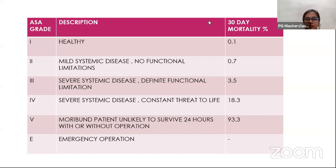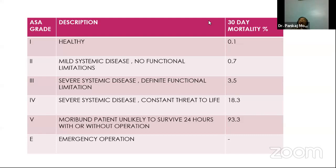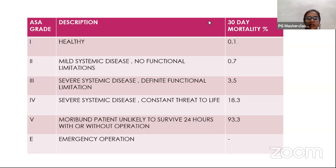Grade E is added in emergency operations. All surgeons must know the ASA grading by heart, as it is important to be aware of the grade the anesthetist assigns and to explain to the patient what it means. For example, when the anesthetist says ASA grade 3, you should be able to explain the mortality risk to the patient. The anesthetist explains the risk to the patient, and the surgeon should also know the mortality rate for each grade. There is a vast difference between grade 3 at 3.5% and grade 4 at 18.3% mortality.